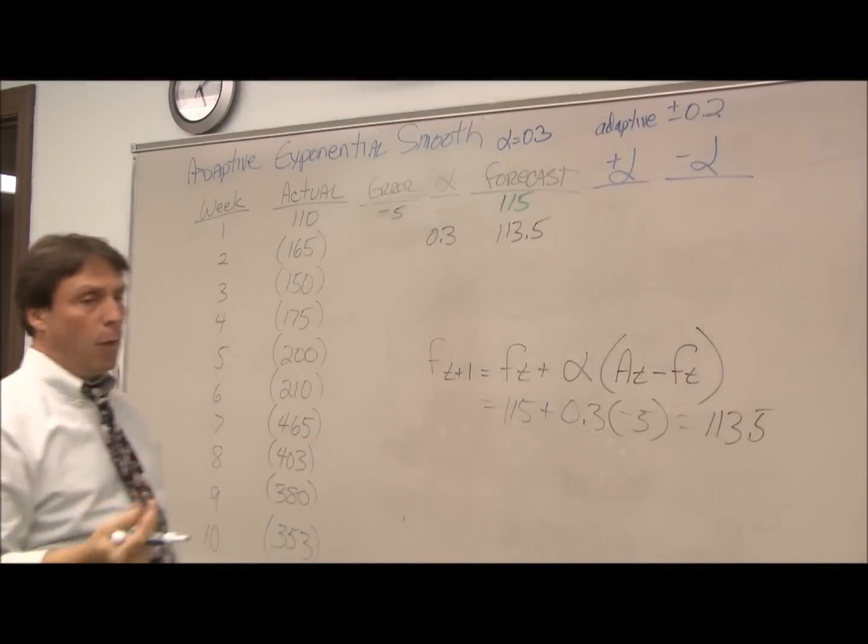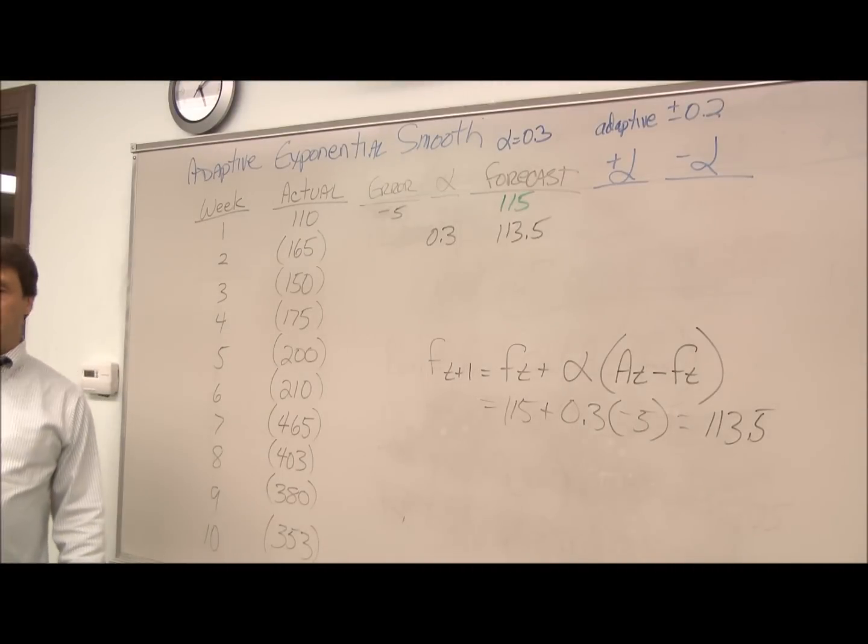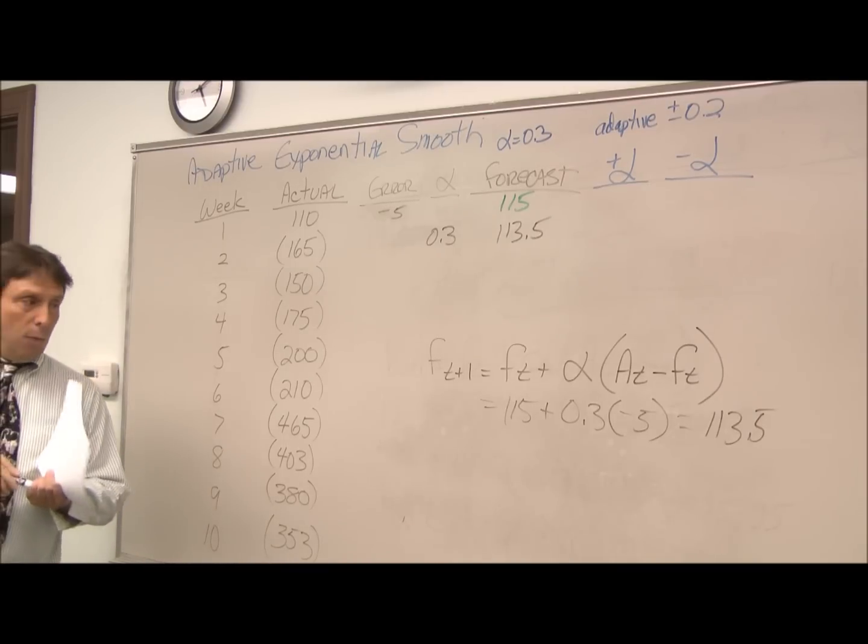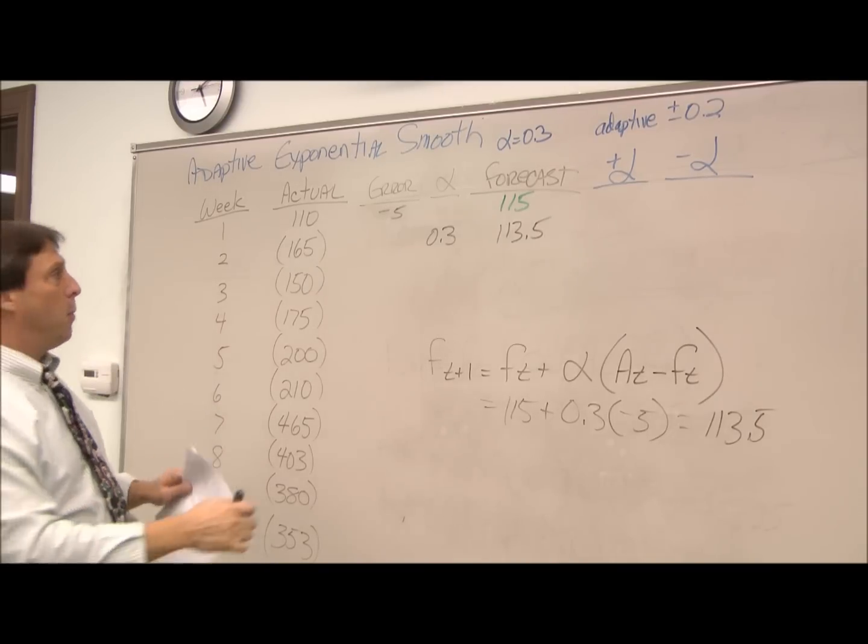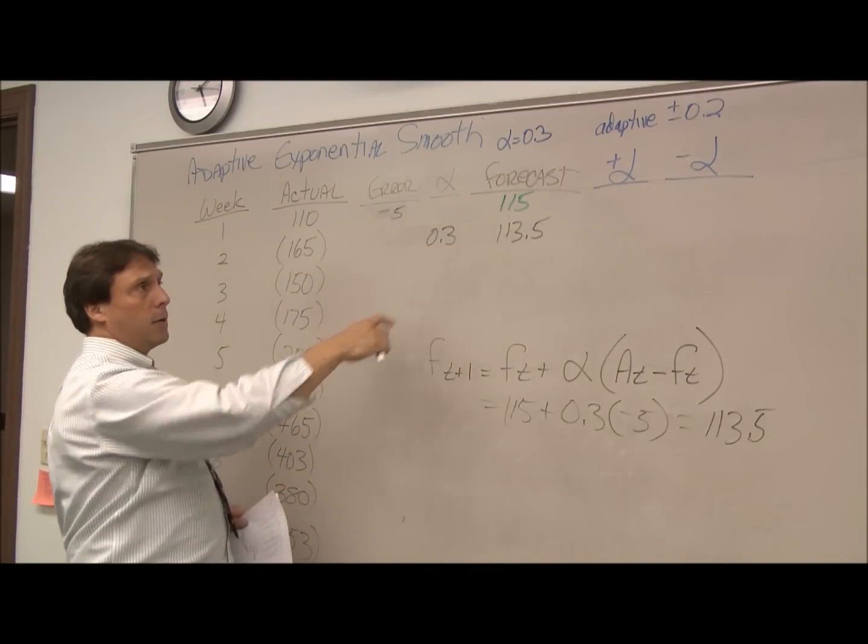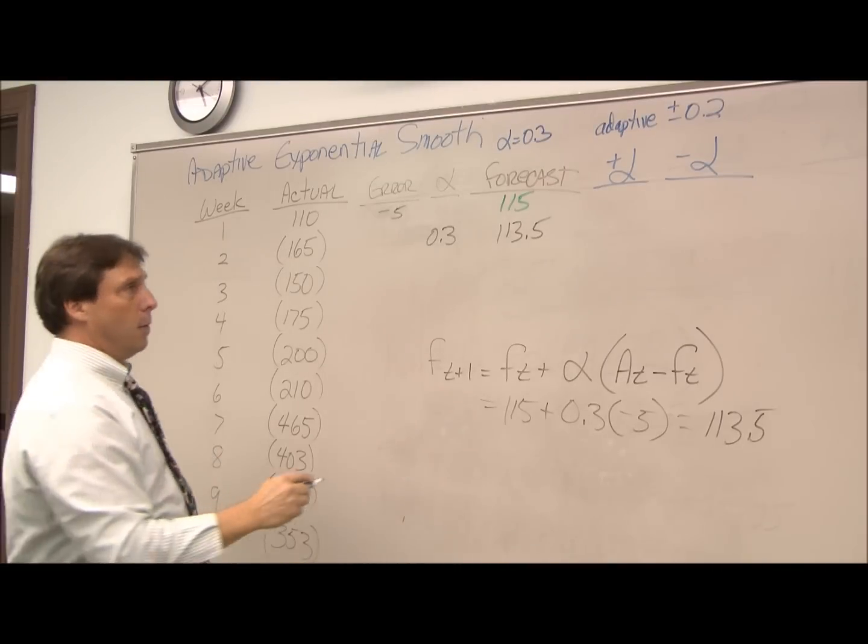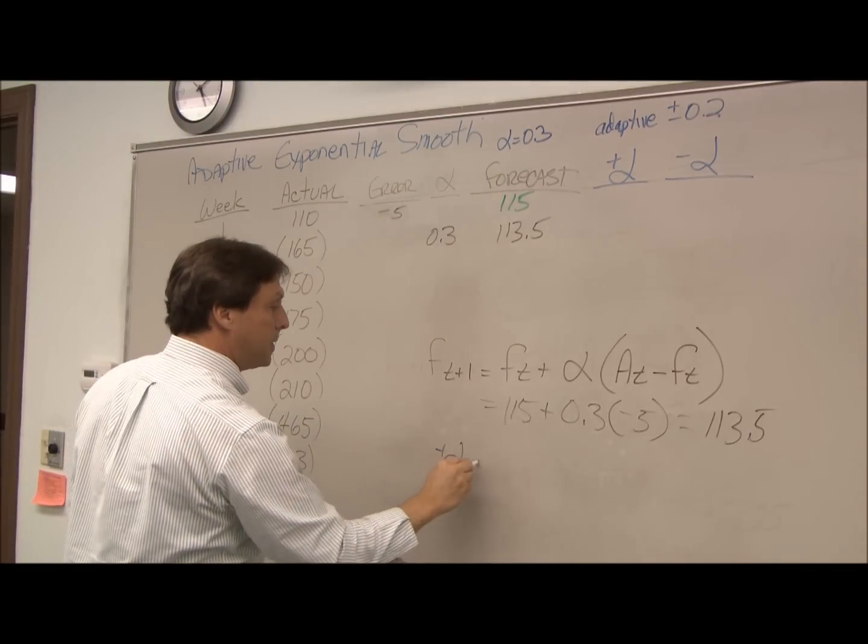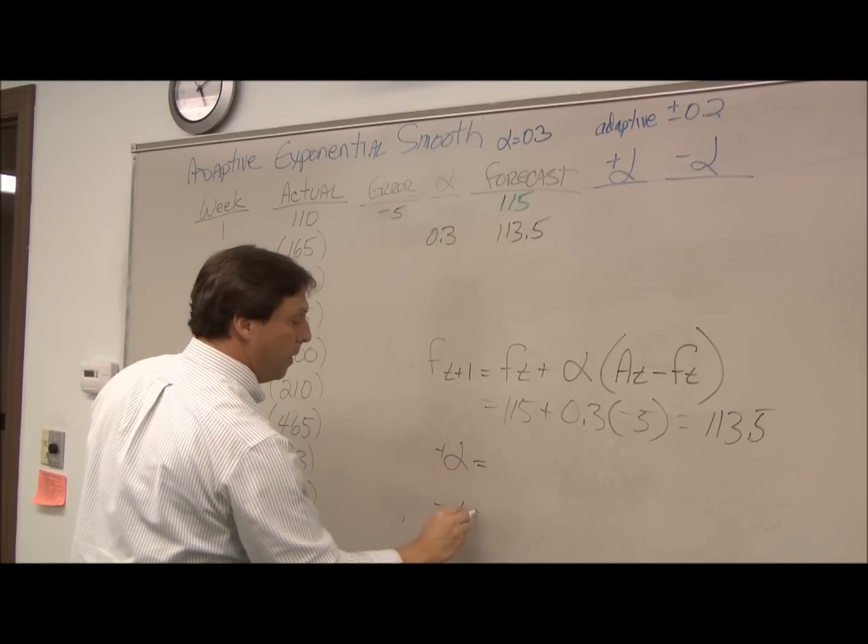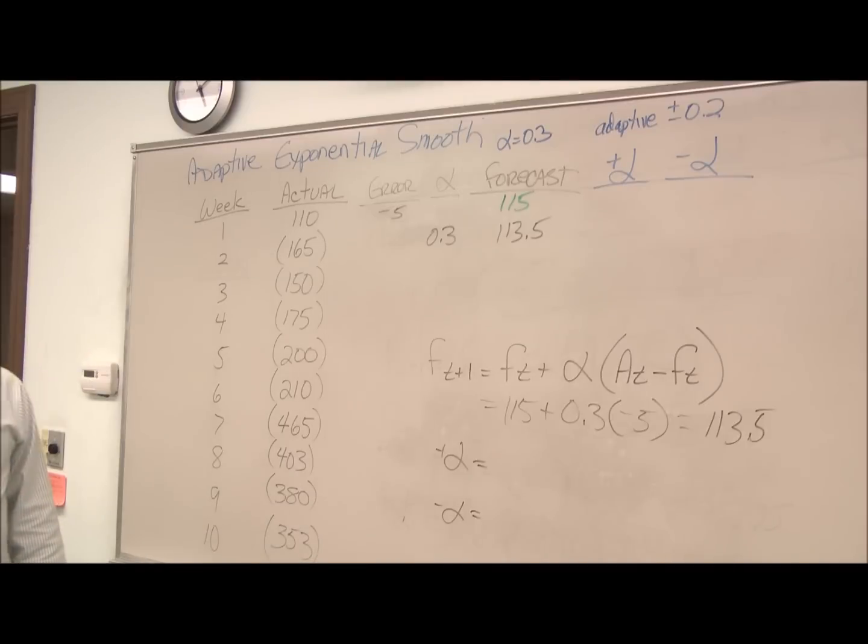Forecasting is exactly the same with exponential smooth as with adaptive exponential smooth. What's going to differ is what we use for an alpha for the next forecast, and the way we calculate that is we do a plus alpha and a minus alpha and determine which alpha is closest.